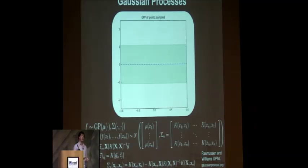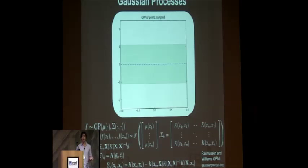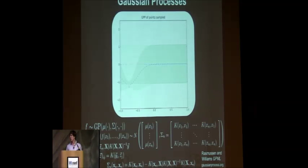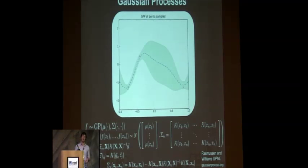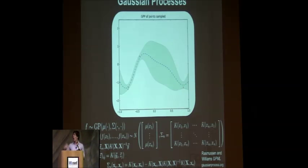So what's a Gaussian process? At every point in the space we're representing that underlying function with a Gaussian — some mean and some variance. At the beginning we don't know anything so we take the prior, but as we start to sample points our view of the world changes. The mean drops and the variance gets tighter around points we've sampled. Our underlying function becomes more and more known as we sample more and more points, and we can use this to find the points of highest expected improvement.